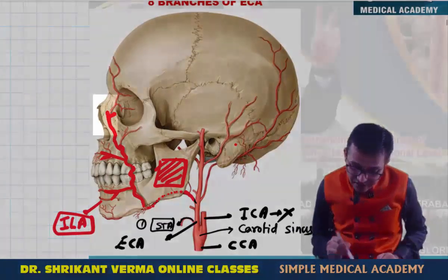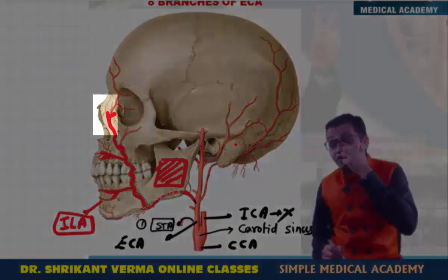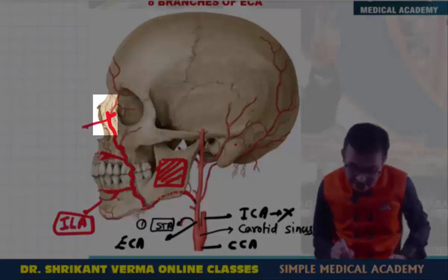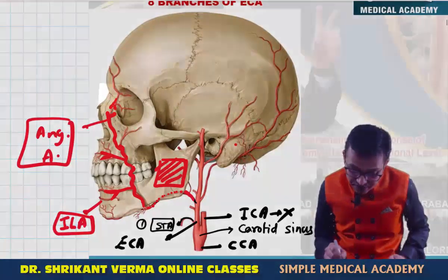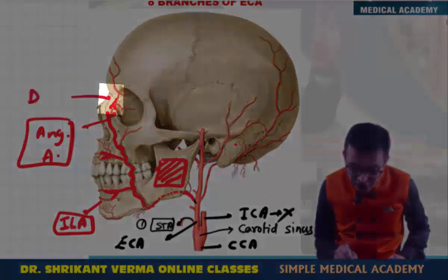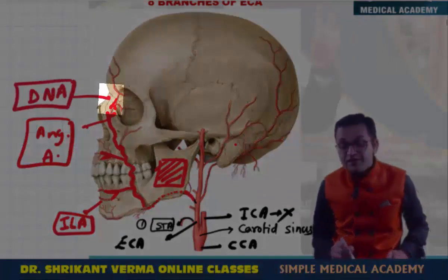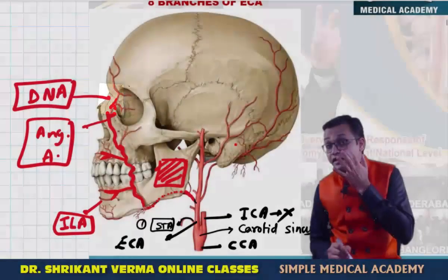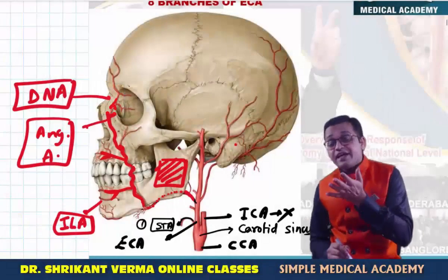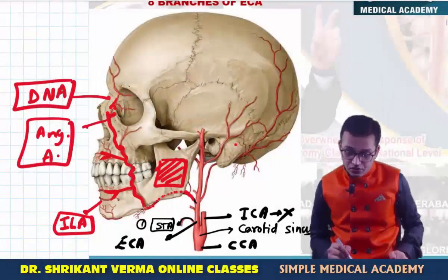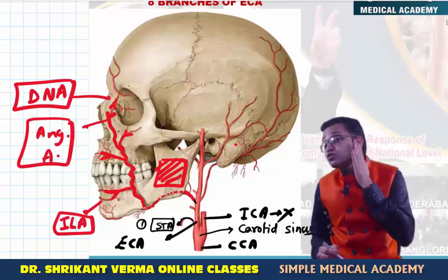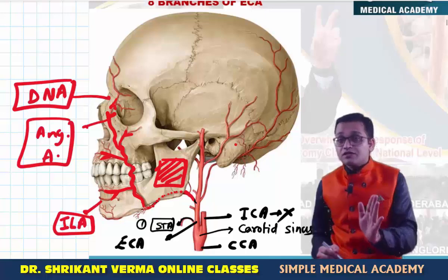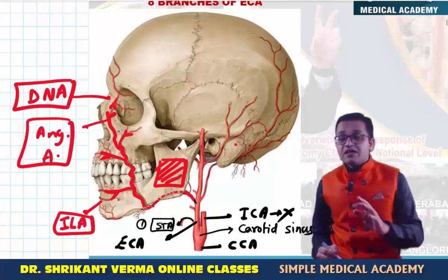As it continues running upward, it reaches the medial angle of the eye and ends as the angular artery. The angular artery anastomoses with the dorsal nasal artery at the medial angle of the eye. It also gives various unnamed muscular branches on the posterior side. These are the various branches of the facial artery and its course.